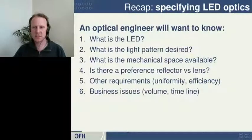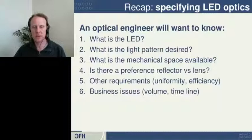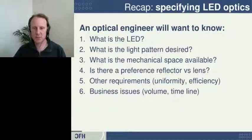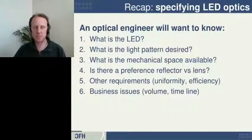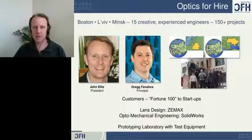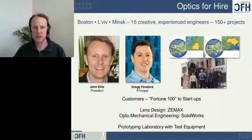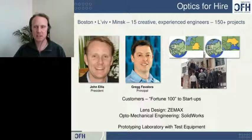So to recap, here are the six things you should communicate when talking to an optical engineer: what is the LED that you're using, what is the light pattern that you want to achieve, what's the mechanical space you have available, do you have any preference for a lens versus a reflector, any other specific requirements, and some business issues. These are things that we deal with every day at my company. We're an optical engineering firm and we've designed a hundred or more LED optics. If you have a question, please give us a call — we're happy to help. Thanks and have a great day.